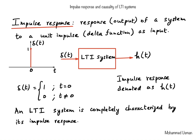The impulse response is conventionally denoted as h of t, which here refers to the impulse response of a continuous time system. The importance of the impulse response is that an LTI system is completely characterized by its impulse response. That means if we know the impulse response of an LTI system, we can compute the output of the LTI system for any other input signal x of t.